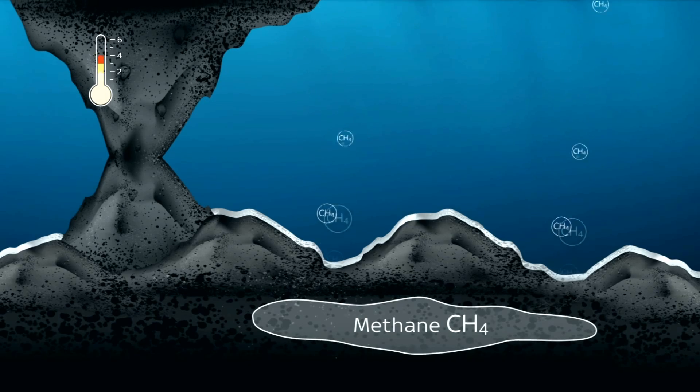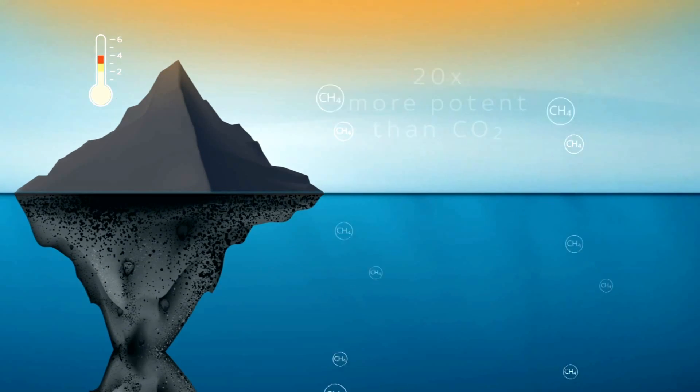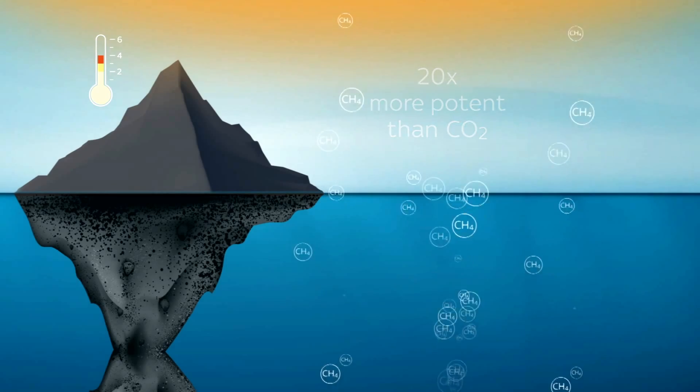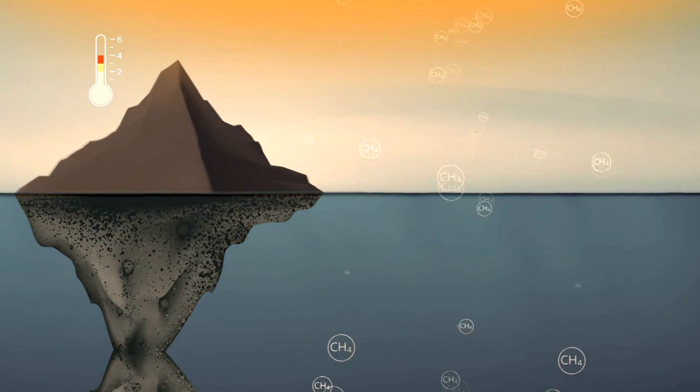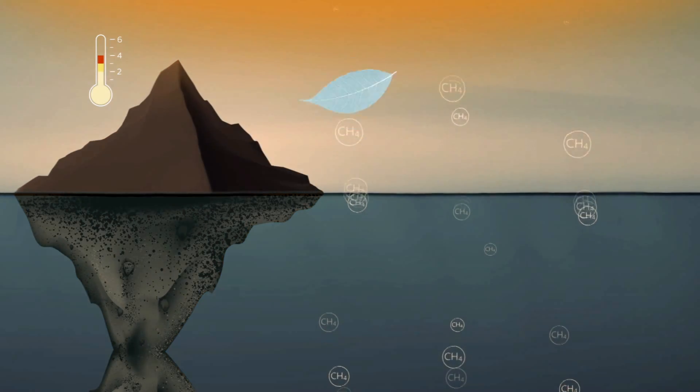Methane is a greenhouse gas 20 times more potent than CO2. A huge eruption would make the chances of us avoiding a 5 degree rise extremely remote.